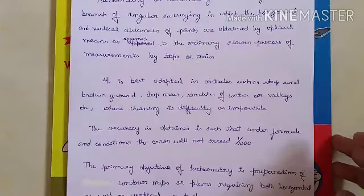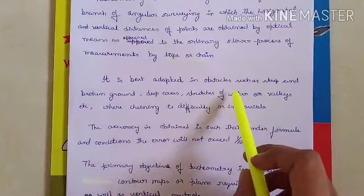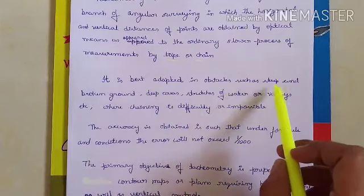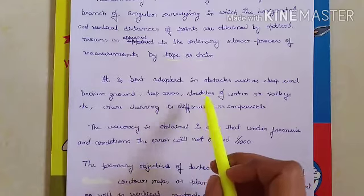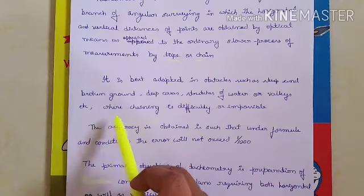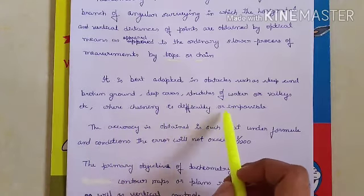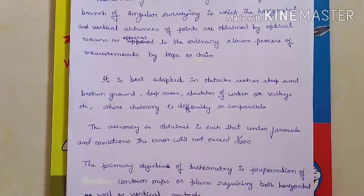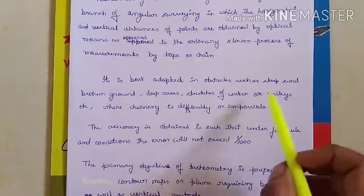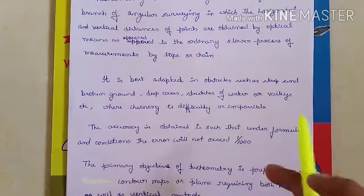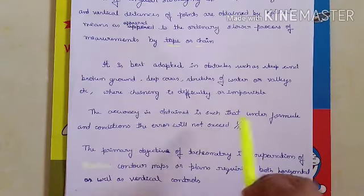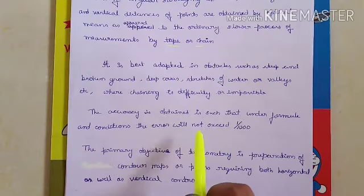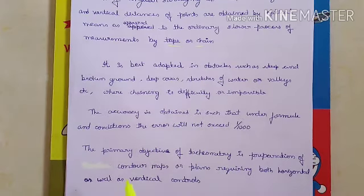Tachymetry is best adopted in obstacles such as steep and broken grounds, deep areas, stretches of water, or valleys where chaining is difficult or impossible. It is applied in those cases where chaining is difficult. The accuracy is such that under favorable conditions the error will not exceed 1 in 1000.